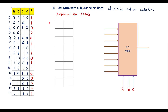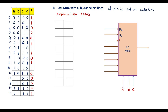In the implementation table, first write the possible data lines D0 to D7. Since A, B, C are the select lines and D is the data line, we can observe in the D column that alternately there is 0 and 1 — for all even values D is 0, and for all odd values D is 1.